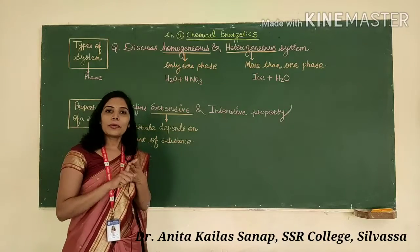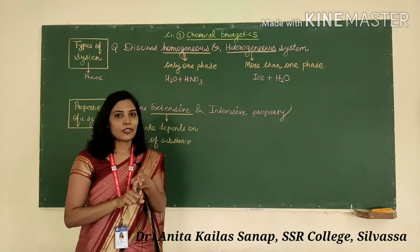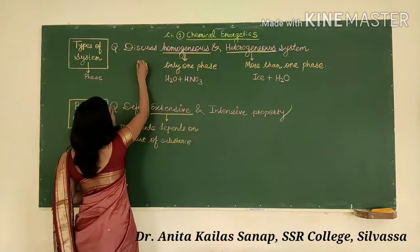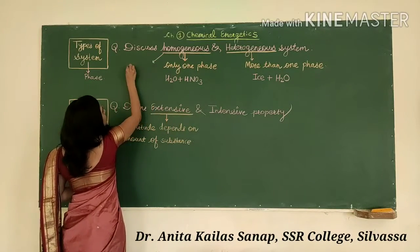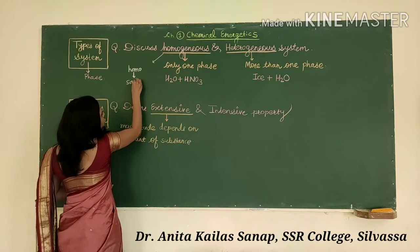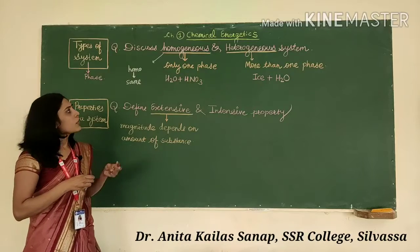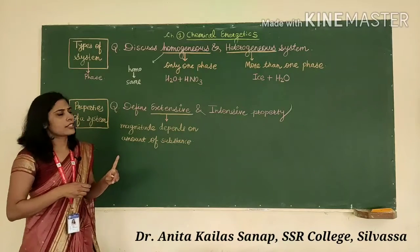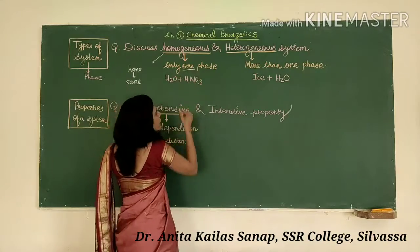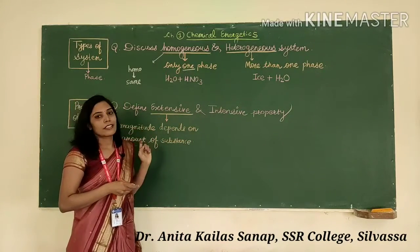There are two major types of the system: homogeneous system and heterogeneous system. 'Homo' means the same. So a homogeneous system is one where there is a presence of only one phase. When there is only one phase, it is called a homogeneous system.